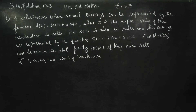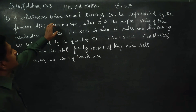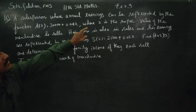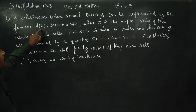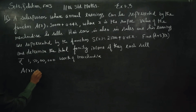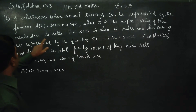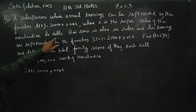Hello 11th Standard Students, I am Metro Karanagaran. In Exercise 1.3, a salesperson whose annual earnings can be represented by A of x is equal to — one salesman's annual earnings, which is a fixed salary plus 0.04x, where x is the rupee value of merchandise he sells.